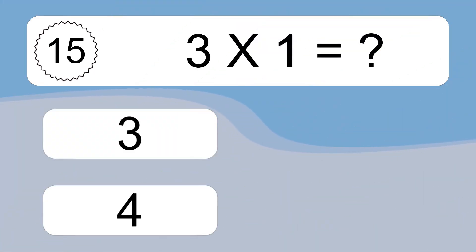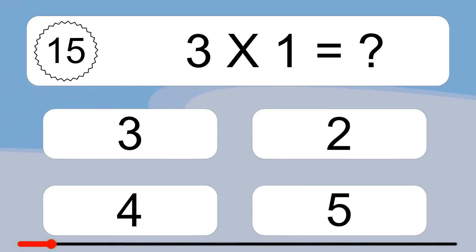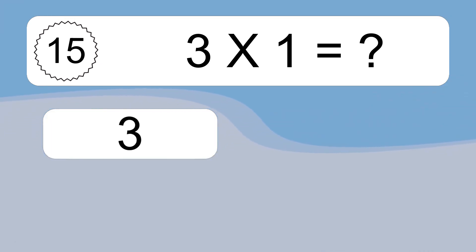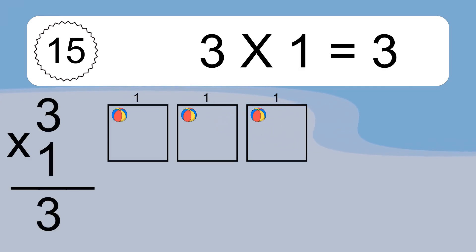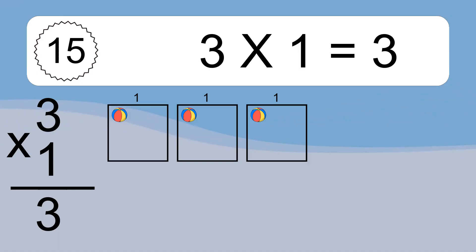3 times 1 equals what? 3 times 1 equals 3. We have 3 boxes, and each box has 1 colorful ball inside. If you count all the balls in all the boxes together, you will have 3 times 1 balls. This equals 3 balls.